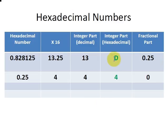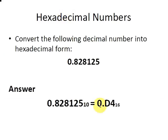So the answer we're looking for is, we have D and 4. So the answer in hexadecimal form is 0.D4. And that is our answer.